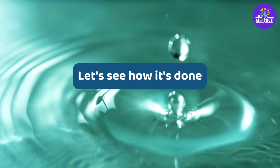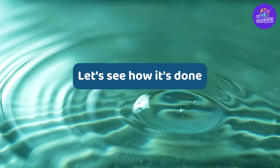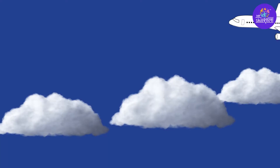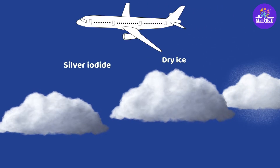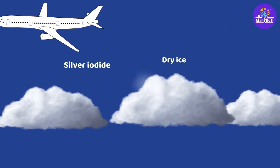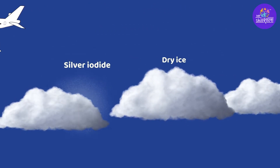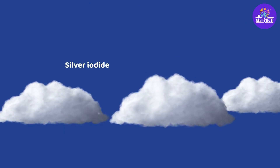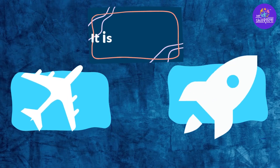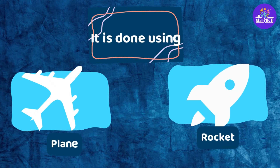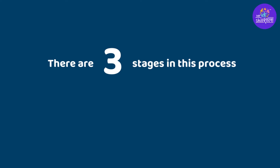So, let's see how it is done. It is done by spraying dry ice or silver iodide into the upper parts of the cloud to form the rain. It is done by using an aeroplane or rocket. There are three stages in this process. First, agitation.